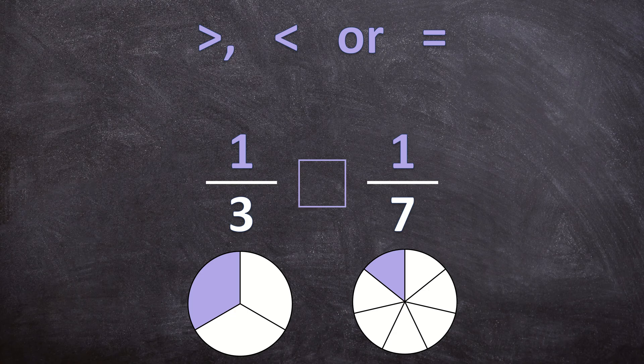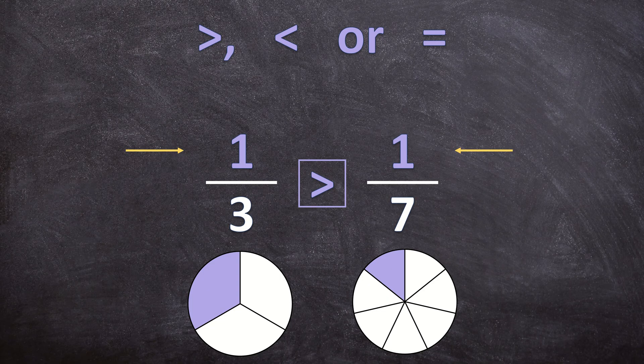For the first circle, 1 of the 3 pieces is colored in, and for the second circle, 1 of the 7 pieces is colored in. Can you see that the first fraction is bigger than the second fraction? The more pieces you cut the circle into, the smaller the parts become. That's why the first fraction is bigger. So when our numerators are the same, we look at the denominators to determine which fraction is bigger.